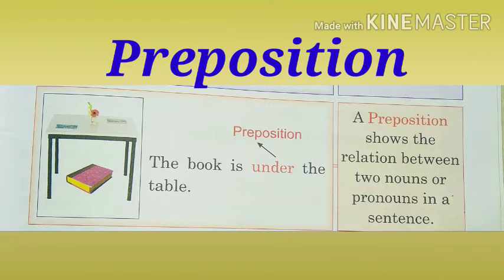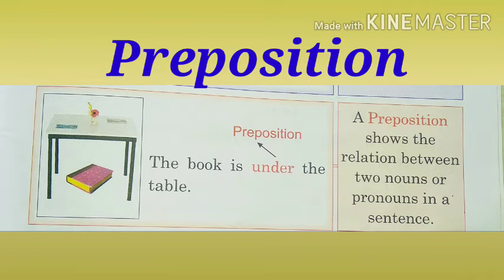For example, you see here: the book is under the table. Where is the book? The book is under the table. So the words such as below, under, above — these are used as prepositions. It shows the relation between the noun and the pronouns that are given. In the picture, you are able to see that the book is kept under the table.